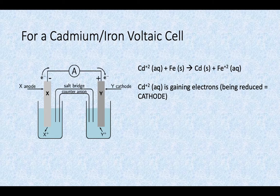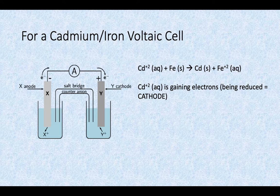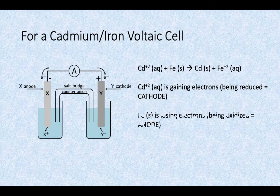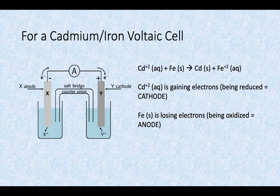We said the cadmium was the one that's gaining the electrons being reduced at the cathode, and the iron is the one losing the electrons at the anode.